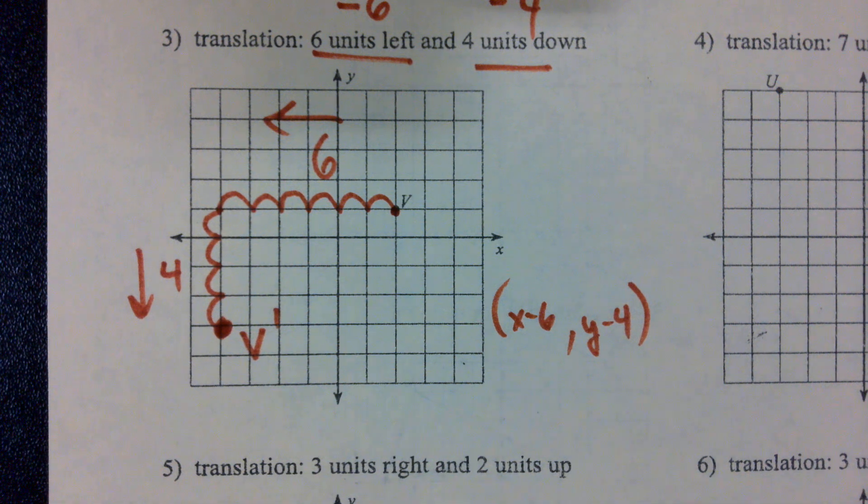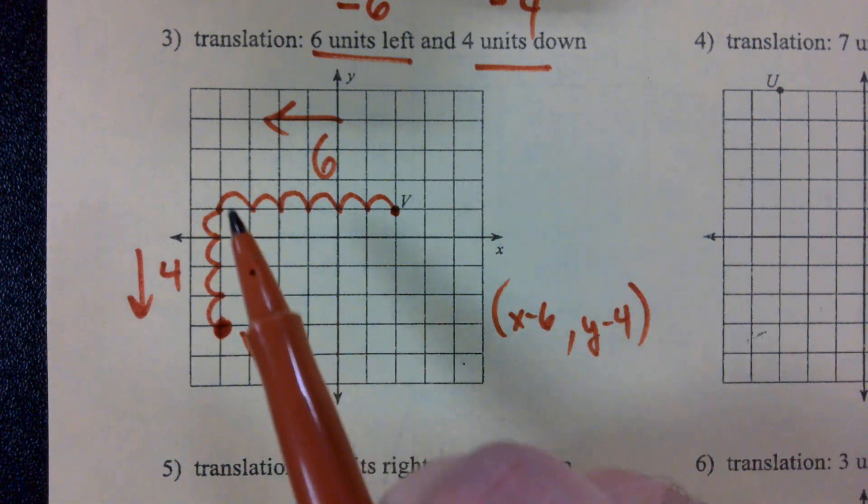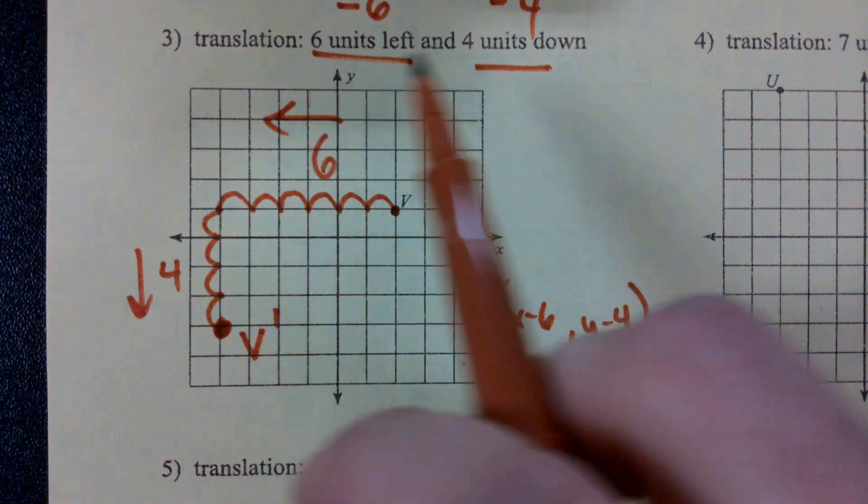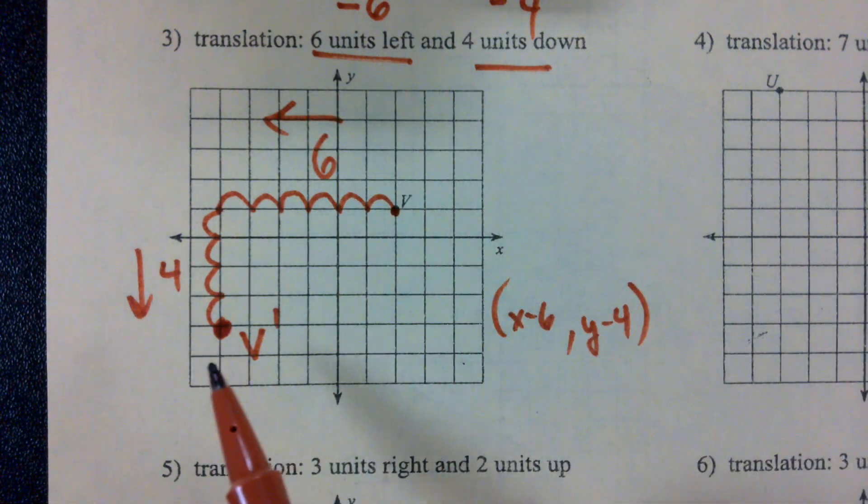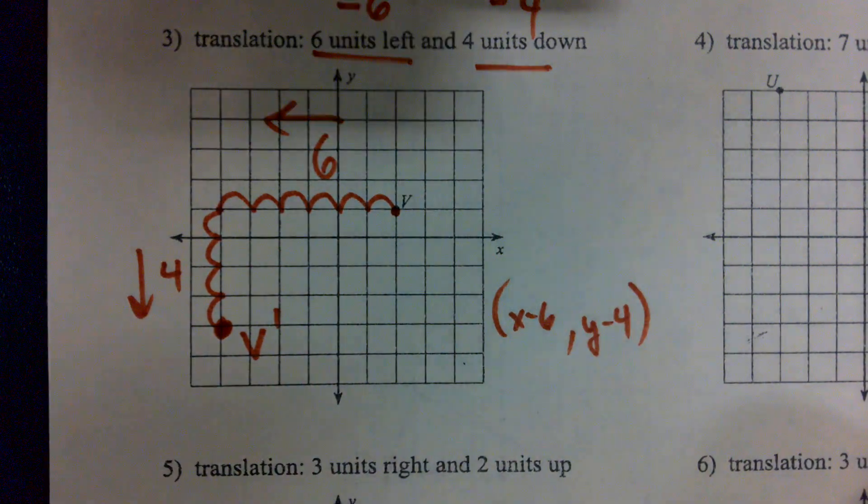Sorry, so like I was saying with this, we start right here at V, move 6 to the left, 4 down, 6 left, 4 down, make our new point, we call that V prime, okay?